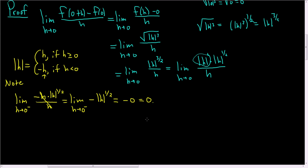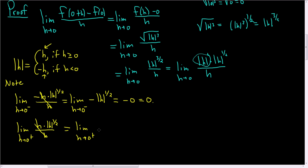Now we'll do the same thing and take the limit from the right. The limit as h approaches 0 from the right — if we're approaching from the right, then h is bigger than 0, so we use the piece where absolute value of h equals h. So this is h times the absolute value of h to the 1 half over h. The h's cancel, so this is the limit as h approaches 0 from the right of the absolute value of h to the 1 half. Plugging in 0 gives us 0.